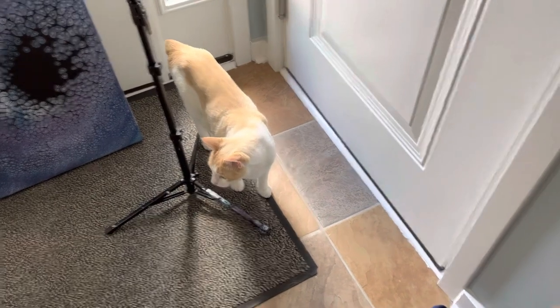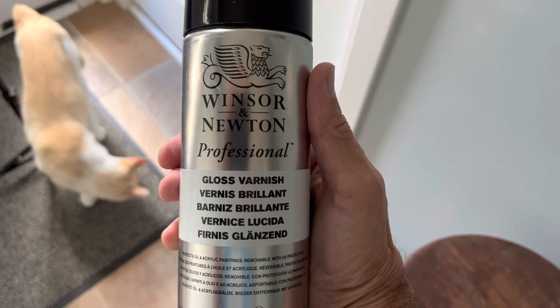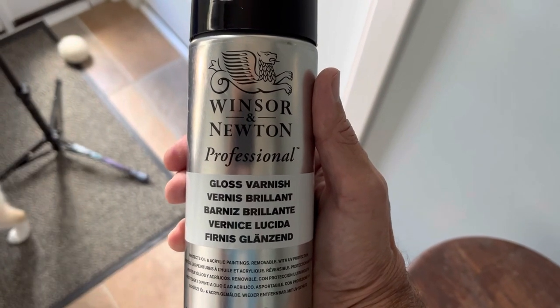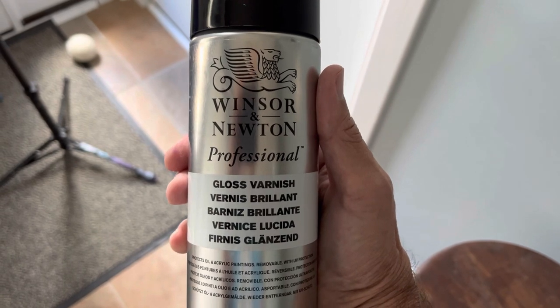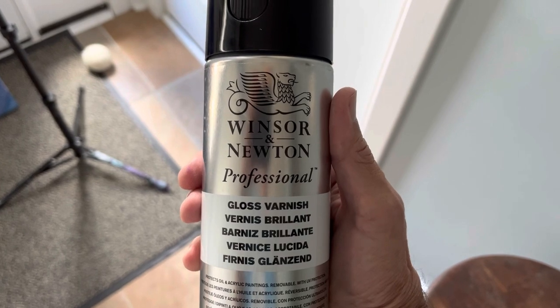So let me show you what I use. I use this as my varnish. It's a gloss varnish. It's Winsor & Newton Professional. Sometimes I use Grumbacher. All I'm going to do is do basically one good coat and that should be enough. Okay, I'm going to head out to my garage right there. We'll get started in just a second.